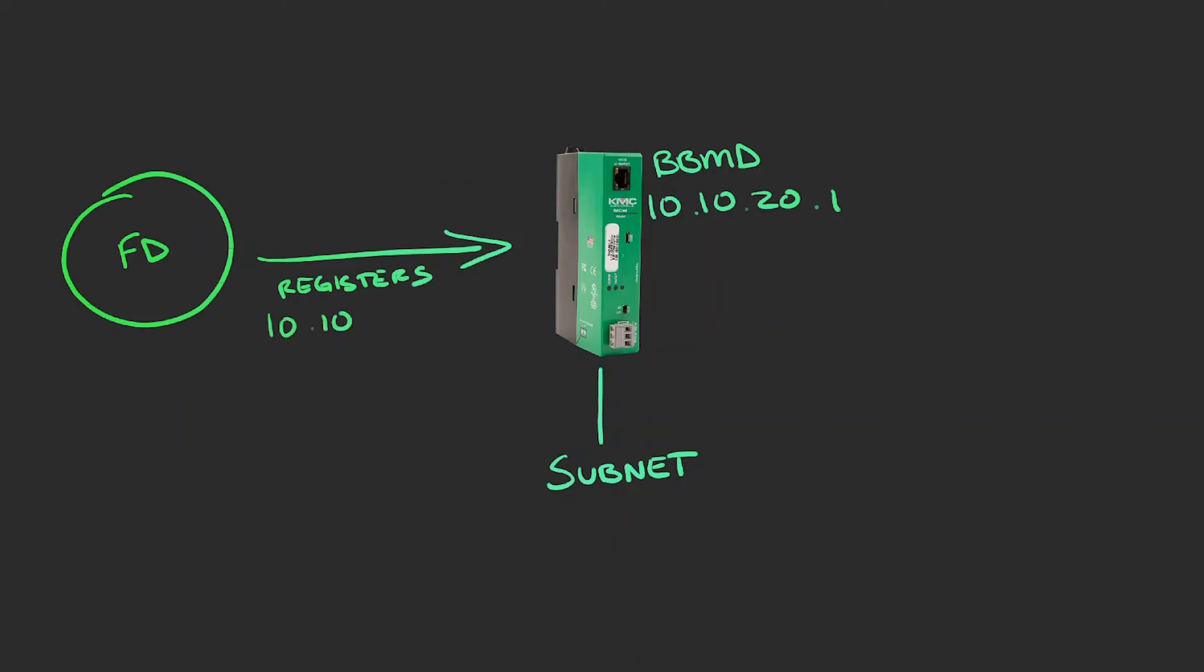The downside of the foreign device is it has a limited time to be registered. This is called the time to live. The default time is usually 30 minutes, which means every 30 minutes the foreign device must re-register with the BBMD.